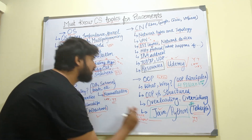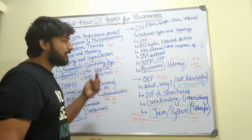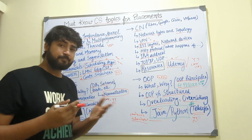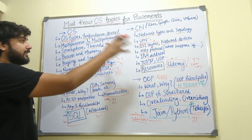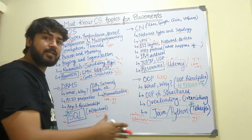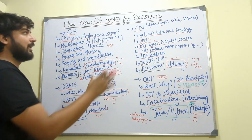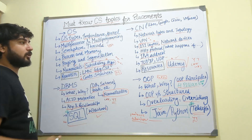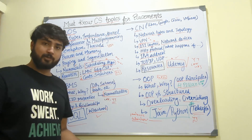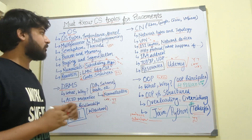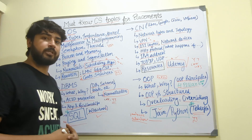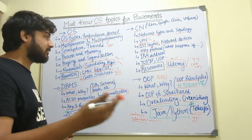All the resources I'm mentioning will have links in the description box, so you don't need to keep track of anything. All in all, these are the four subjects — operating system, computer networks, DBMS, and OOP — and these are the topics you absolutely need to learn in order to have the best shot at your placements, because a lot of good companies will be asking you these things in your interviews. Note these down, go to the resources, learn them, and all the best for your next interview. See you in the next video.